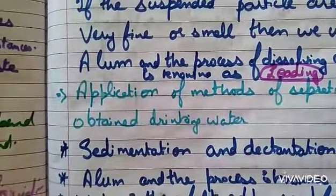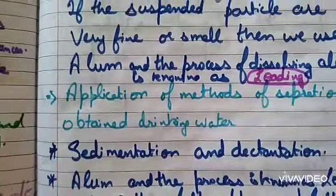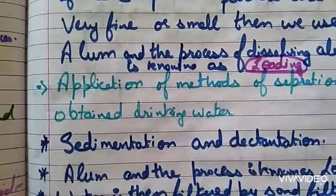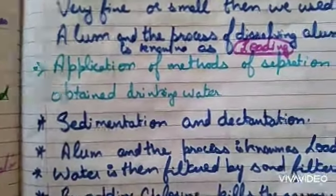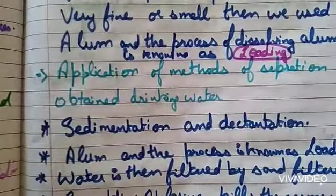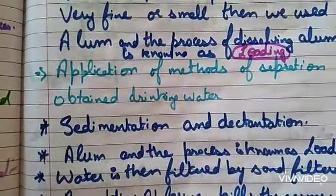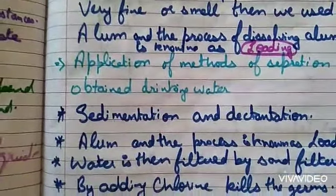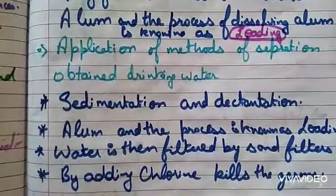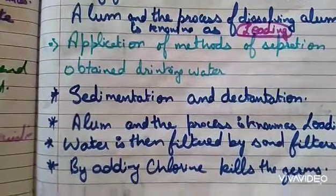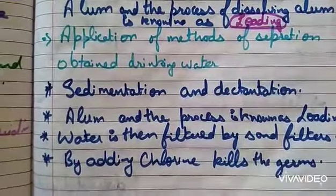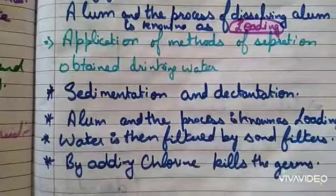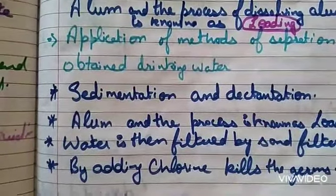After adding alum, the fine clay particles become heavier and settle down, and then the separated water is filtered by sand filters. After sand filtration, we add chlorine to the water. Chlorine is a chemical which kills the germs in water, and after that the water becomes clear and suitable to drink. So these are the four methods of separation by which we obtain drinking water: sedimentation and decantation, alum, sand filtration, and chlorination.